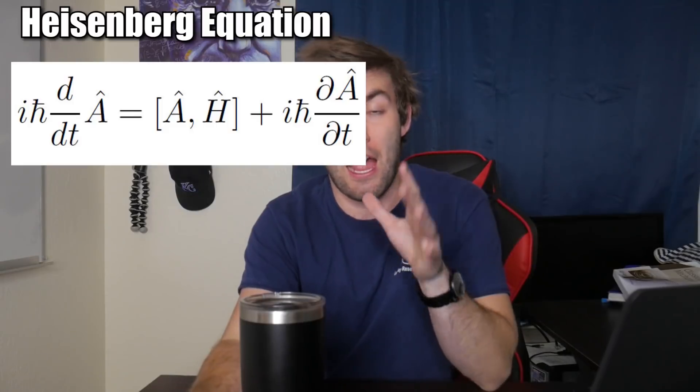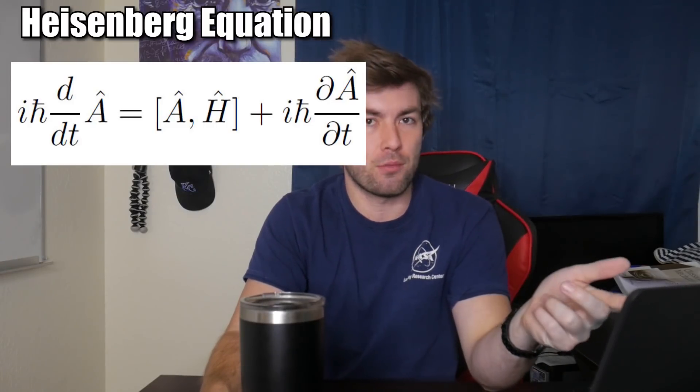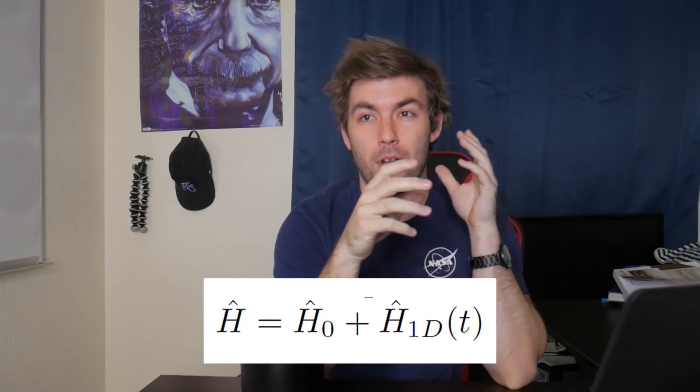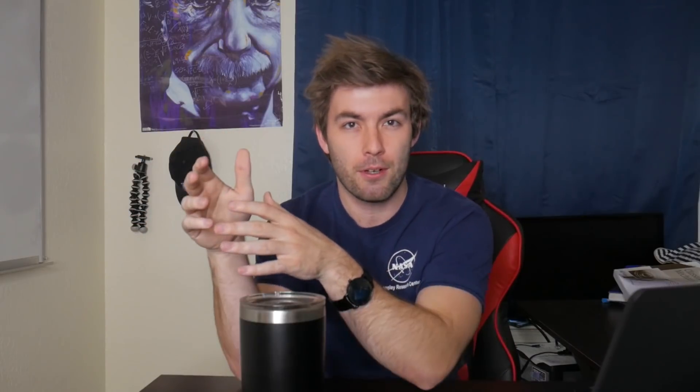In the Heisenberg picture, it is the operators that are time dependent — the observables — and they obey the Heisenberg equation. You might have seen something similar if you've considered the time derivative of the expectation value of the operator, which just leads you to Ehrenfest's theorem. The final picture is the Dirac slash interaction picture, which is a bit more complicated because it's kind of a combination of both. You basically split the Hamiltonian into a time independent part and a perturbative time dependent Hamiltonian, and this allows you to have time dependent states and time dependent operators. All three pictures are equivalent — you can derive the same equations of motion for the expectation value of the operator in all three pictures for either a pure or a mixed state.